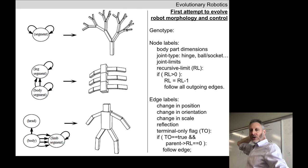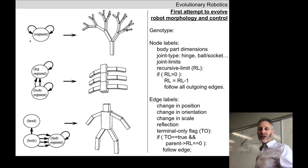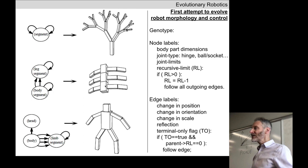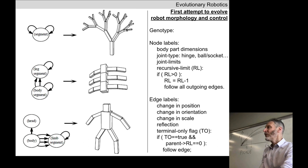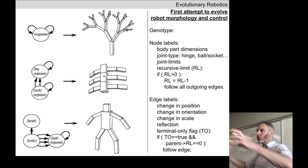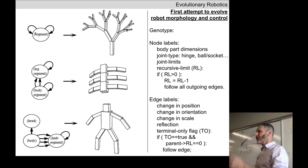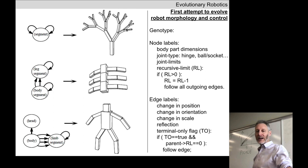One of the nice things about this seemingly non-intuitive genotype-to-phenotype mapping is that it leads to recursive structures. The mapping is recursive — it gives us fractal structures, repetition, symmetry. We've seen this before with HyperNEAT — an evolutionary algorithm designed to bias evolution toward things that are not just random collections of parts, but that have symmetry, repetition, and variations on a theme. There have been several attempts to create genotypes that tend to unpack into non-random phenotypes with repetition, symmetry, fractal-ness, or scale invariance.